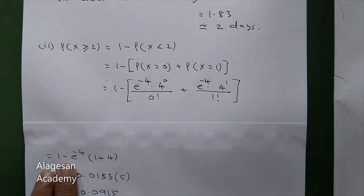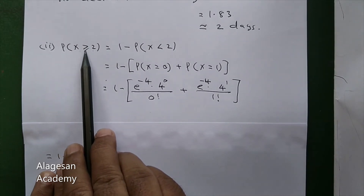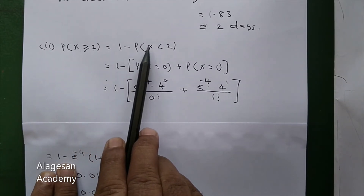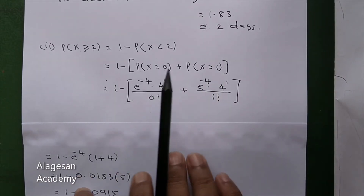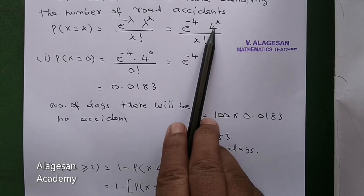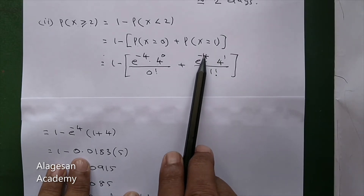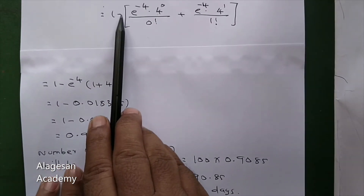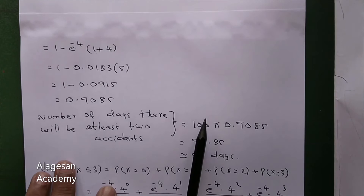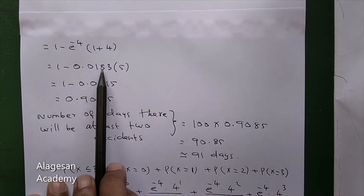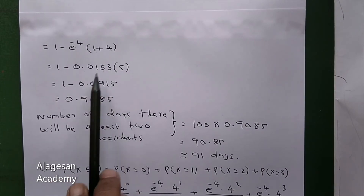Second: P of X greater than or equal to 2 — at least 2 accidents. This equals 1 minus P of X less than 2, which is 1 minus [P(X=0) + P(X=1)]. P(X=0) is e to the power minus 4 times 4 to the power 0 by 0 factorial. P(X=1) is e to the power minus 4 times 4 to the power 1 by 1 factorial. So we get 1 minus e to the power minus 4 times (1 plus 4), which is 1 minus 5 times 0.0183, giving 1 minus 0.0915.